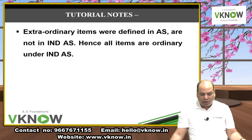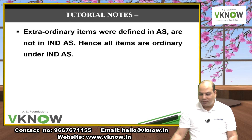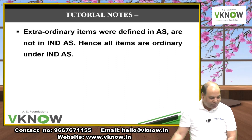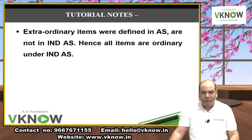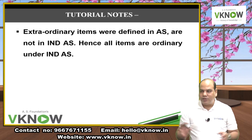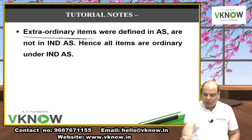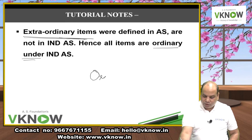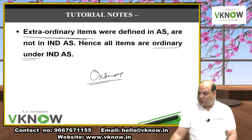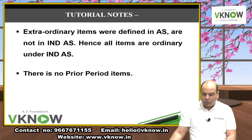Students who studied Schedule 3 in Intermediate may ask about extraordinary items (AS 5 — earthquake loss, fire loss, tsunami loss). Important note: In Ind AS, there is NO concept of extraordinary items. All income and expenses are ordinary. Ind AS companies will not write extraordinary items anywhere in their financial statements.